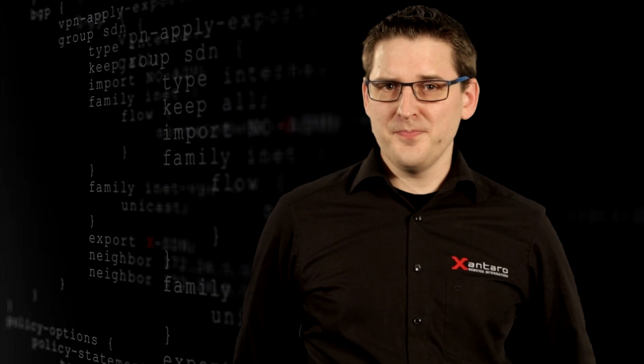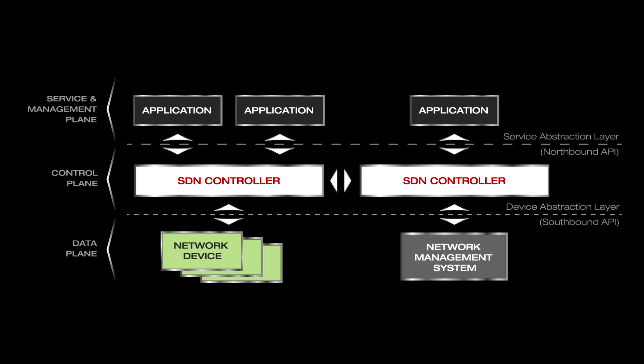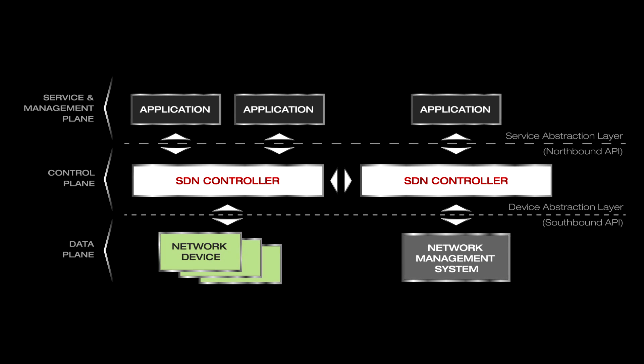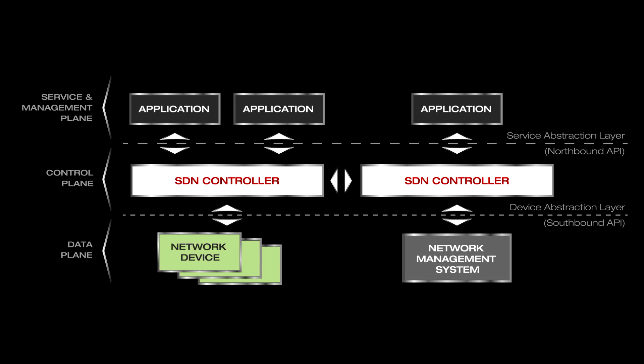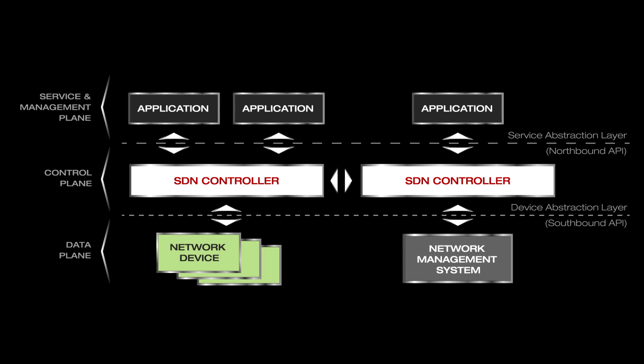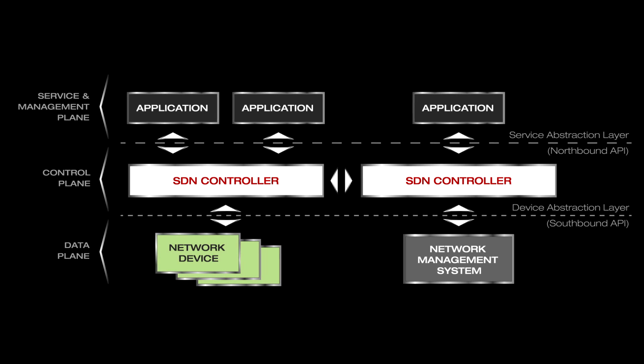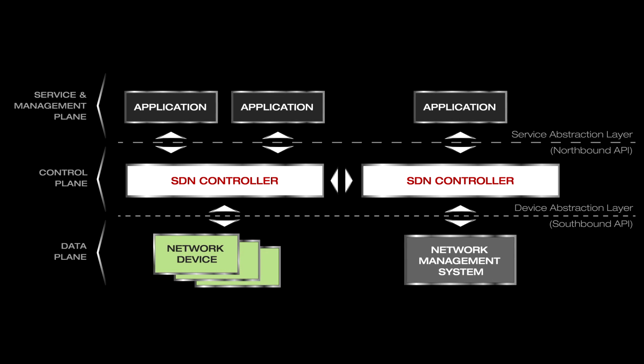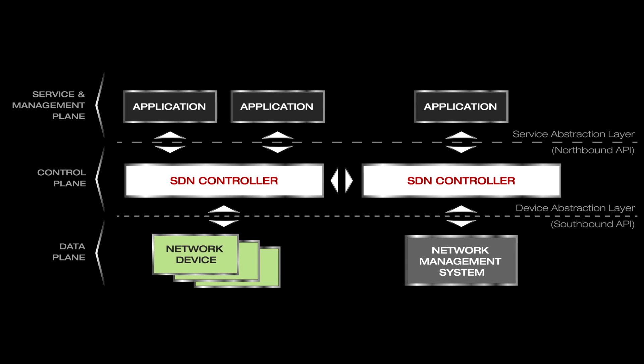In the control plane, however, we do not have real abstraction, as we are usually involving a proprietary CLI or graphical user interface to actually tell the device what it should do. In the SDN architecture we usually have a centralized controller with a defined northbound interface to our orchestration tools and a southbound interface to our networking hardware. The controller translates requests from the northbound interface to instructions that are understood by the networking devices.